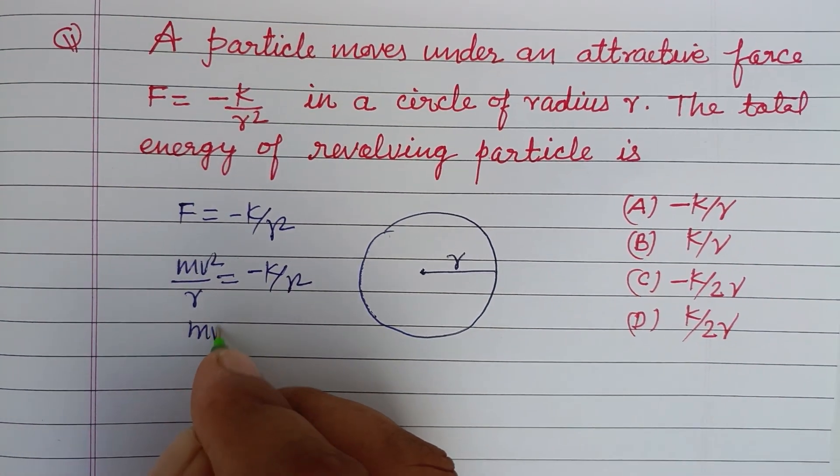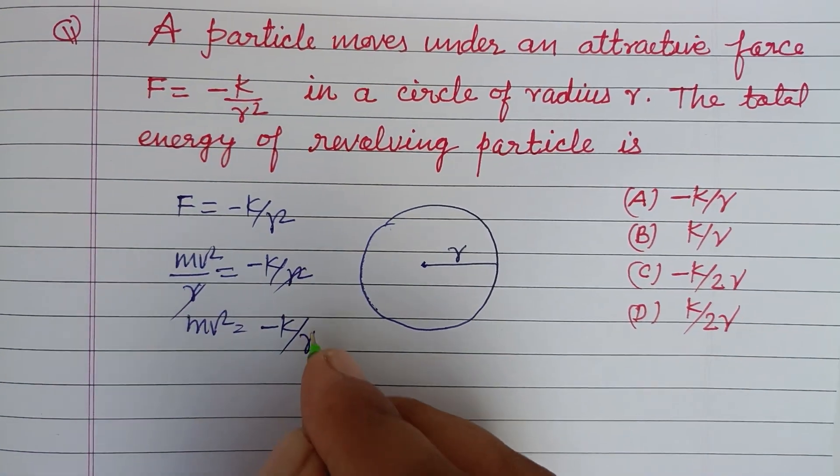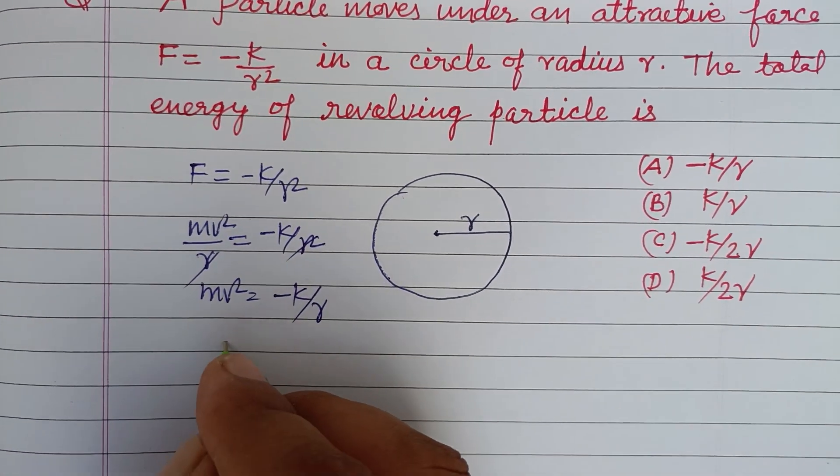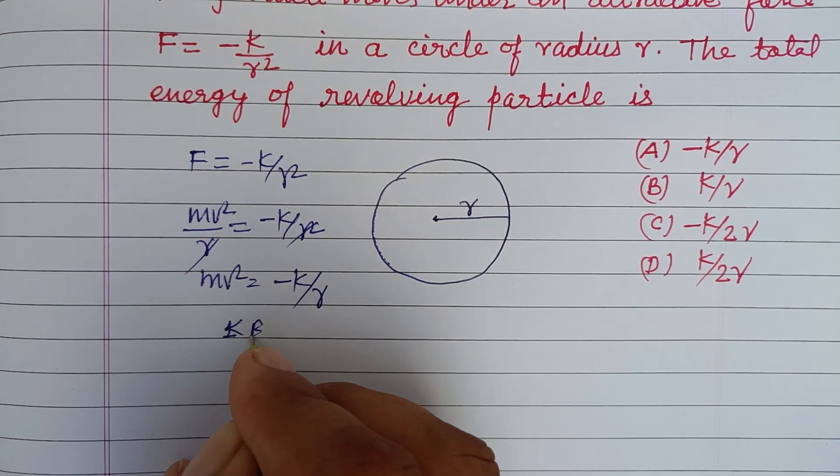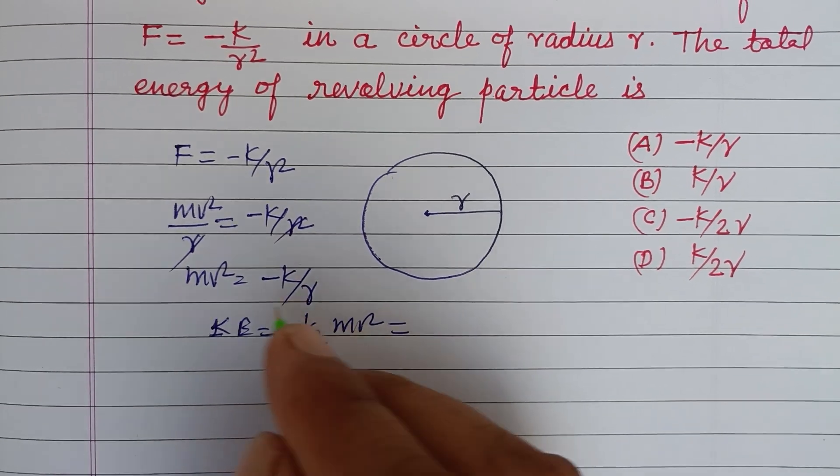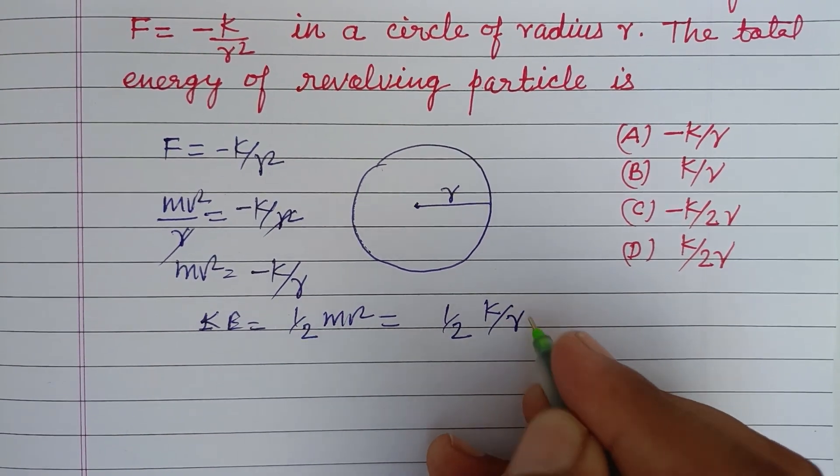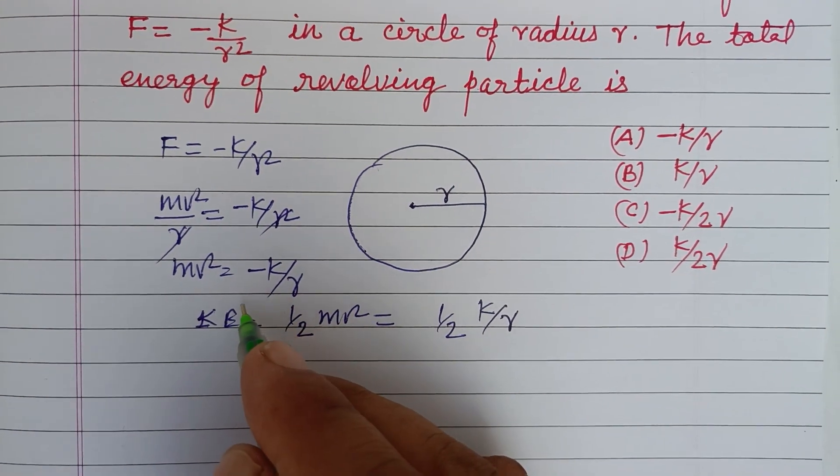So mv square equals minus K over R. If we take kinetic energy KE, which is half mv square, putting this value of mv square gives us half K over R. We take positive sign because kinetic energy is positive, so K over 2R is kinetic energy.